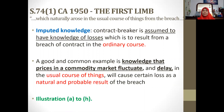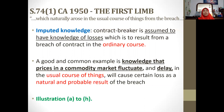A good and common example is knowledge that prices in the commodity market fluctuate. Whenever business or dealings pertain to the commodity market, both parties are supposed to have the basic common knowledge that the price of the commodity fluctuates. Whatever delay will affect the prices, and delay in the usual course of things will cause certain losses as a natural and probable result of the breach. So the contract breaker cannot say 'I don't know,' because this is something natural and ordinary.